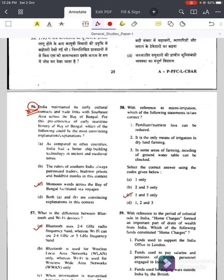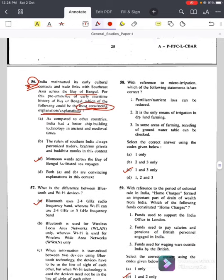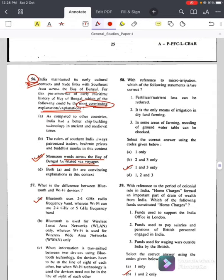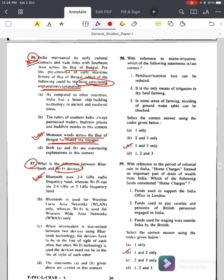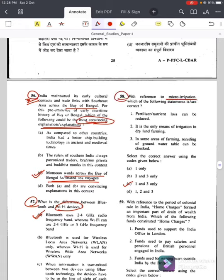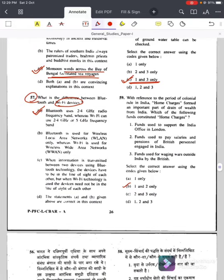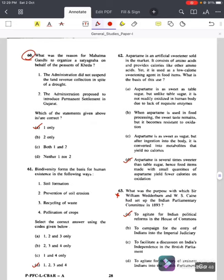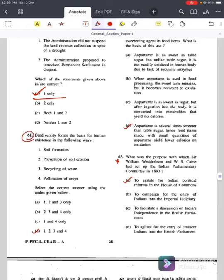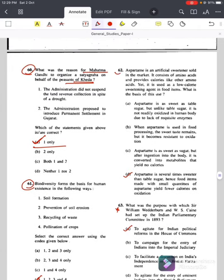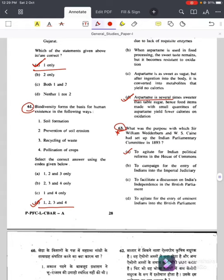Question number fifty-five with respect to common factor for tribal insurrection, answer is D, the complete disruption of the old agrarian order of tribal communities. Question number fifty-six, again some of the answer keys are different in different books. India maintained its early cultural contacts and trade links with Southeast Asia across the Bay of Bengal. For this pre-eminence of early maritime history of Bay of Bengal, which of the following could be the most convincing explanation? Answer is C, monsoon winds across the Bay of Bengal facilitated sea voyages. Question number fifty-seven, Wi-Fi related, answer is A. Question number fifty-eight with respect to micro-irrigation, answer is C, one and three only. Question number fifty-nine, home charges, answer is B, one and two only.